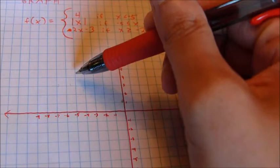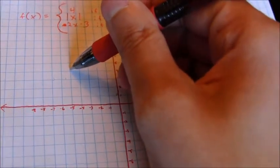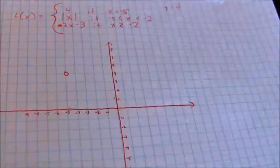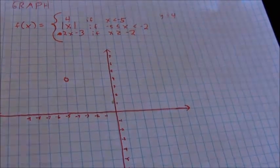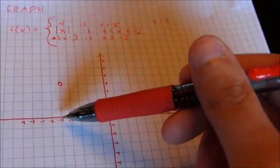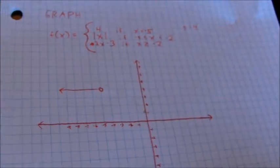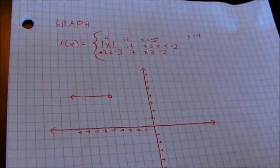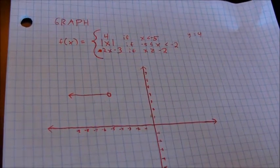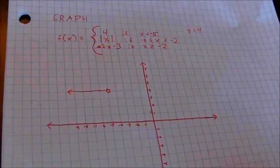Notice it's not equal to. So I'm going to have a circle here at a y value of 4 and at an x value of negative 5. And for x values less than that, I'm going to have my line there. So it's a horizontal line for values less than negative 5.